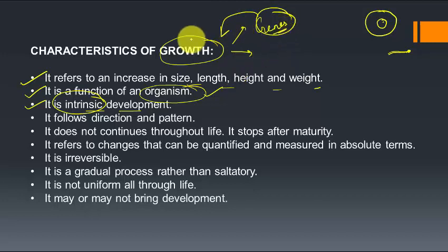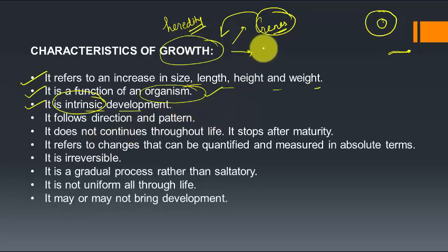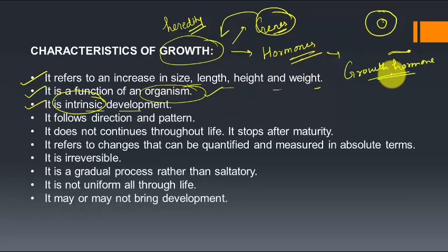Growth is majorly determined by heredity. For example, if a person has short height, it is often because his parents also have short height — he has inherited that characteristic from them. The second important factor determining growth is hormones, secreted by endocrine glands. For instance, growth hormone is secreted by the pituitary gland, also called the master gland.